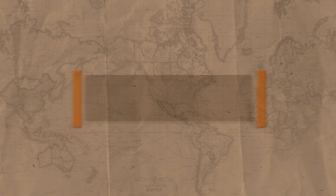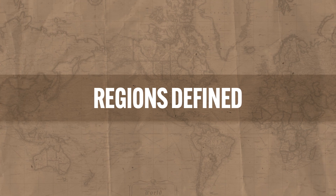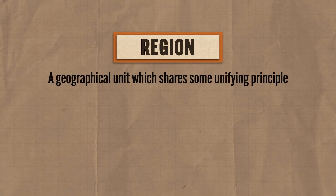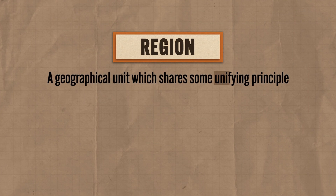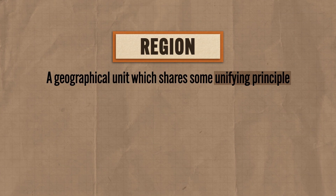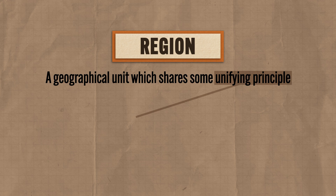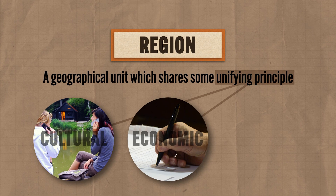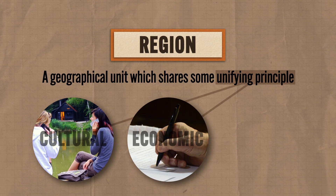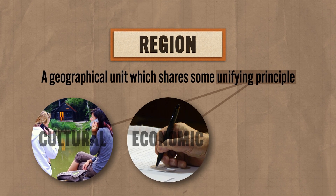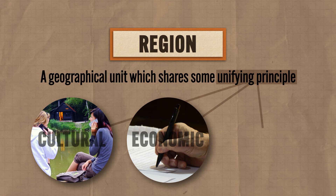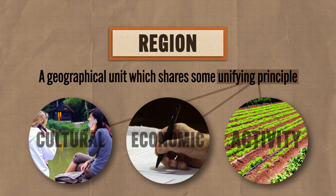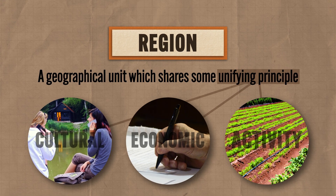So let's start with a definition. On the most basic level, a region is a geographical unit which shares some unifying principle. And that unifying principle can be cultural, like a shared language, or economic, like a treaty that binds states together into an economic unit, or a pattern of activity like farming or near anything else that helps bind people together.